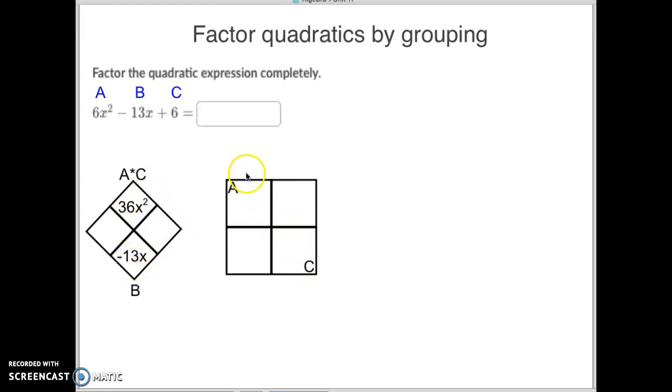So we fill these two in automatically. And then over in the rectangle, we're going to fill in what is the a term. Well, the a term is just this one right here. 6x squared. So we're going to plug that in. Your c term down here is the positive 6. So we're going to put a positive 6 right there. That part gets filled in. It's automatic and it's easy. Now comes the thinking part.